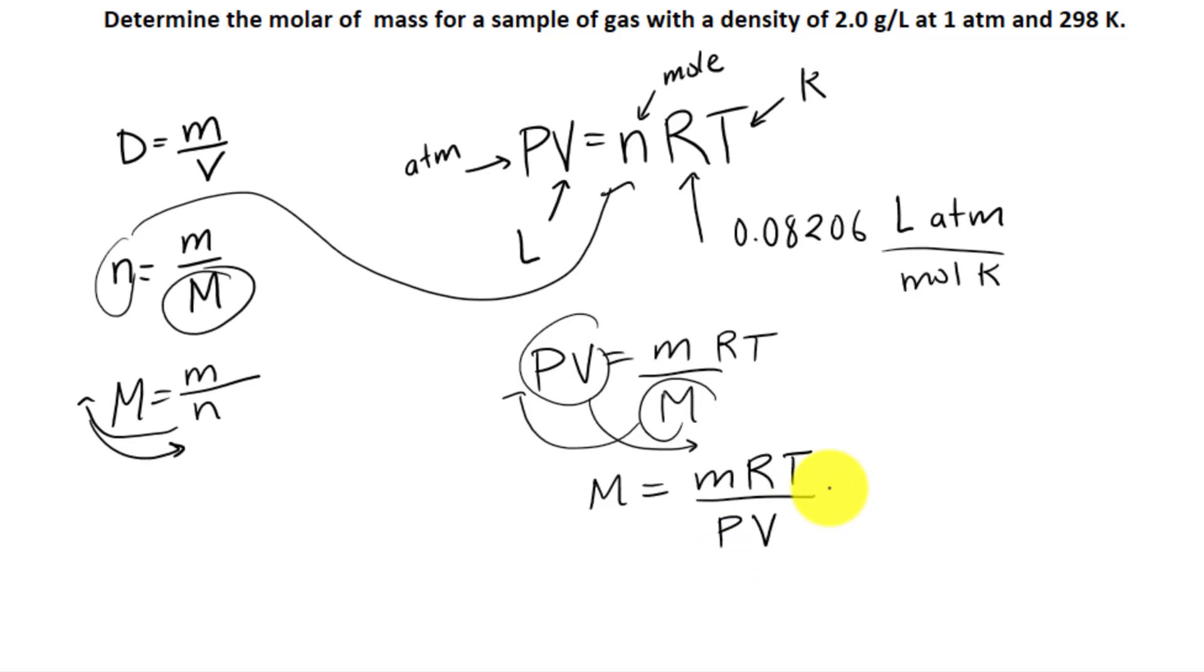Can we substitute in anything else? Well, look at this. This mass and volume, what is that equal to? That is density right there. So let's rewrite this in terms of density. Now we're going to have molar mass equal to density times RT divided by P.